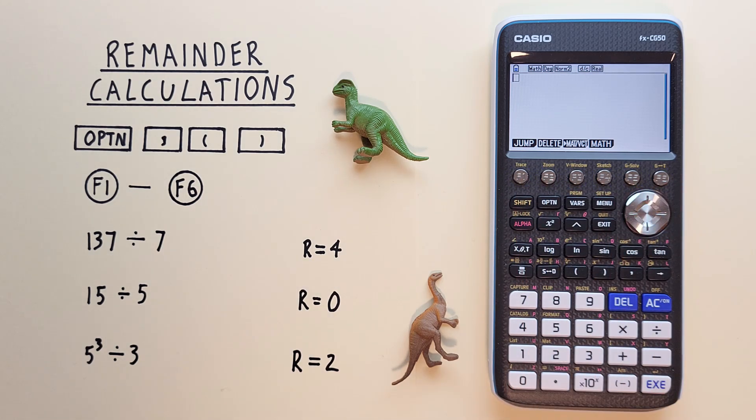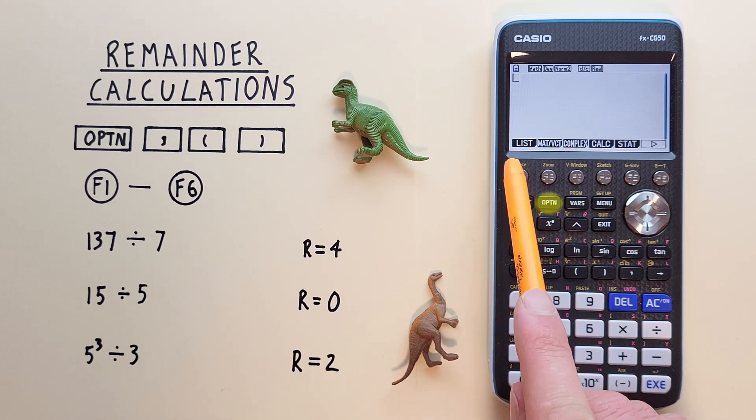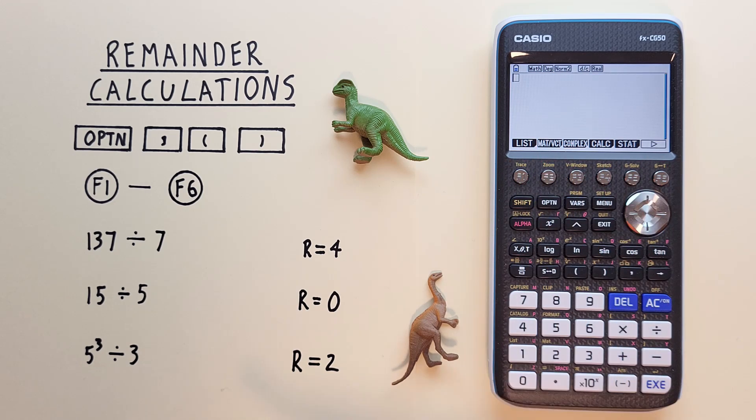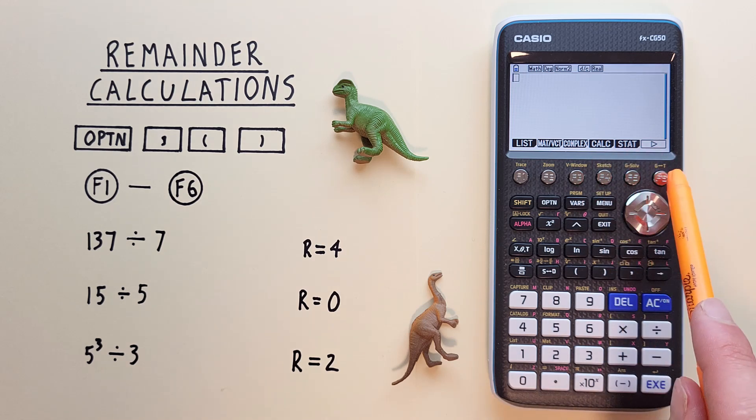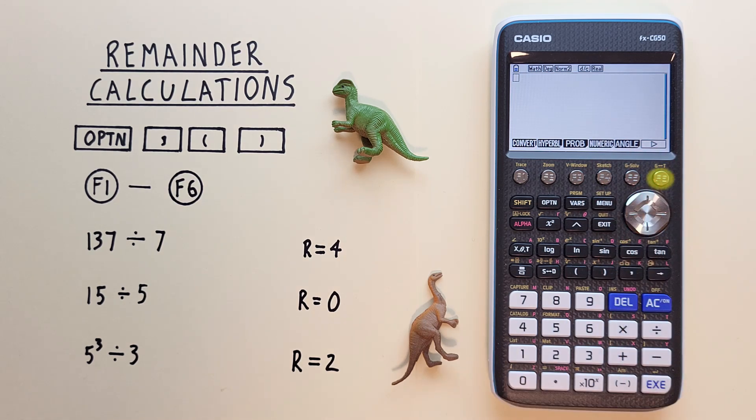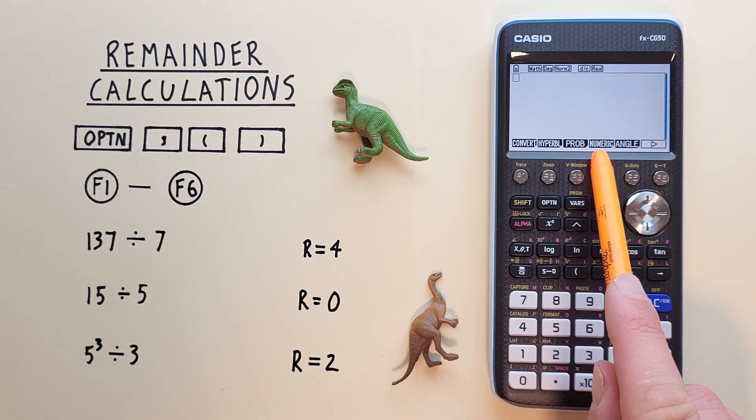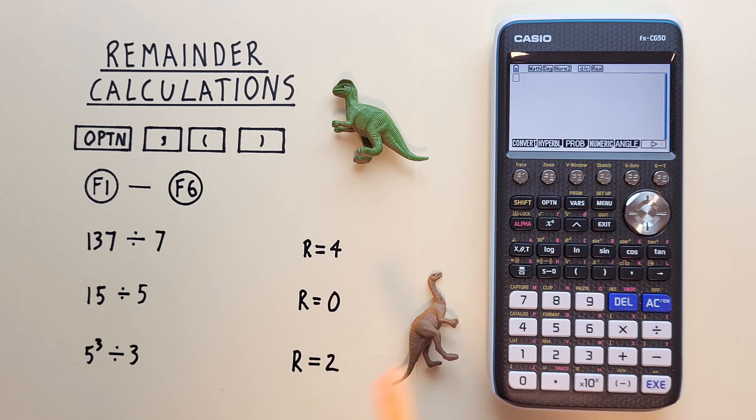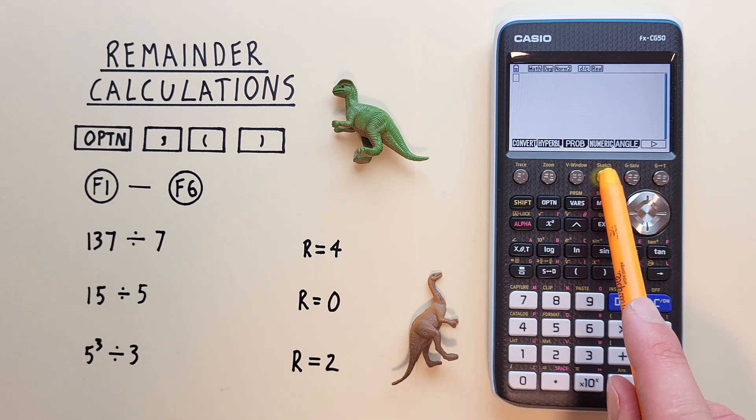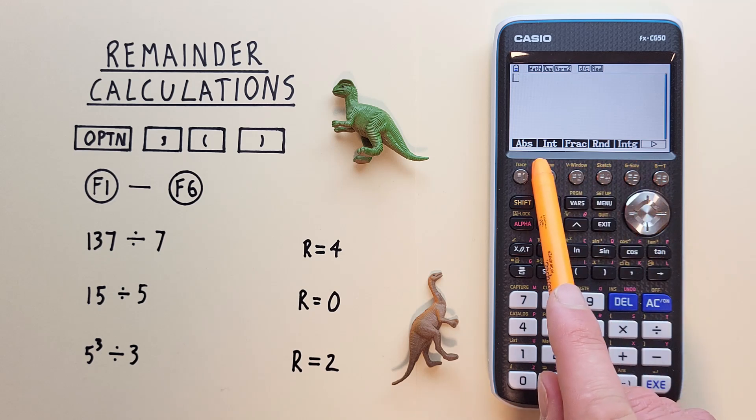To find the remainder or modulus, we have to navigate to the modulus function. To do that, first we hit the Option key so that we see this menu here. Then we hit F6 to go to the next set of options until we see Numeric under F4. So we hit F4 so that we see this set of options.